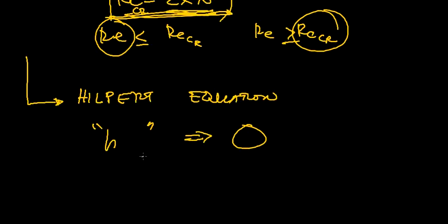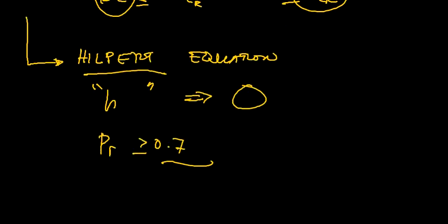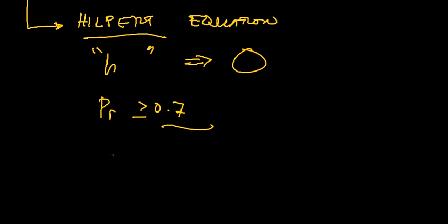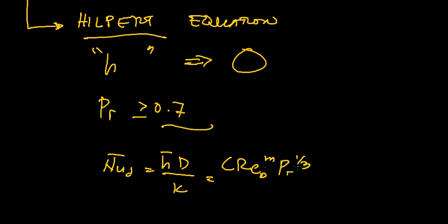An empirical correlation widely used is for PR greater than or equal to 0.7 due to Hilpert. It's expressed as Nu average D equals H average D over K, or also equal to C times Re to the D to the M times PR to the one third.